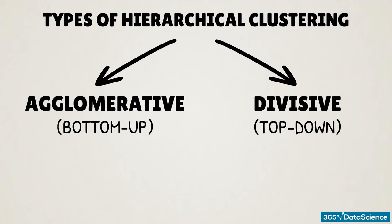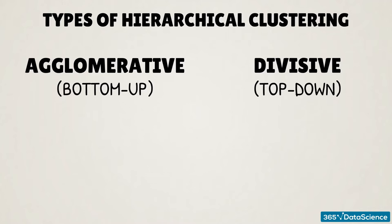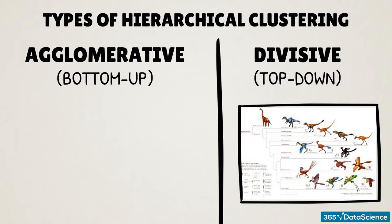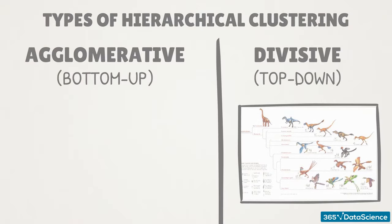With divisive clustering, we start from a situation where all observations are in the same cluster. Then we split this big cluster into two smaller ones, then continue with 3, 4, 5, and so on, until each observation is its own separate cluster. However, in order to find the best split, we must explore all possibilities at each step. Therefore, faster methods have been developed, such as k-means, which can simulate this divisive technique.